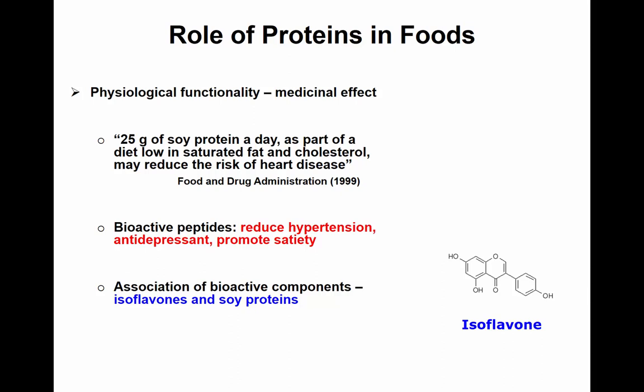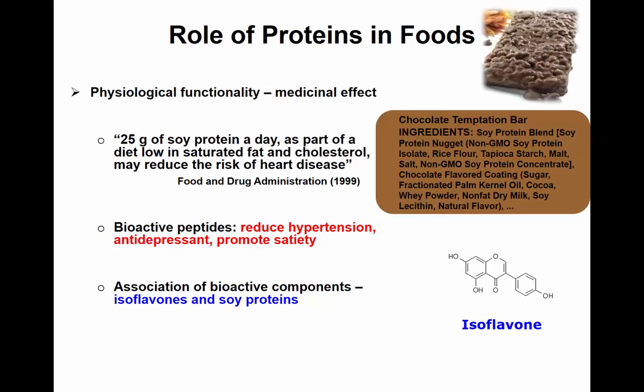There are physiological benefits of protein — not just amino acids and digestibility, but health contributions. For example, in 1999 the FDA approved a claim that 25 grams of soy protein a day as part of a diet low in saturated fat and cholesterol may reduce the risk of heart disease. This claim came after many studies proving the association of soy protein and cardiovascular health. That's a physiological benefit, not per se a nutritional quality. Many products in the market — like nutrition bars or protein bars — are formulated with soy protein, and there was a tremendous increase in its utilization since 1999 because of that claim.